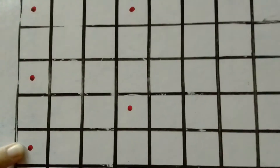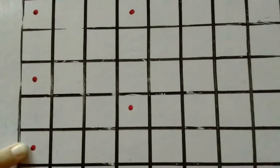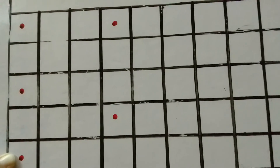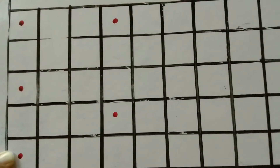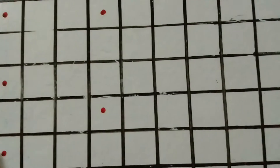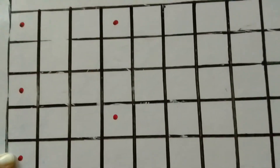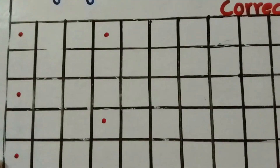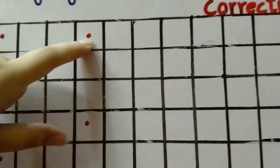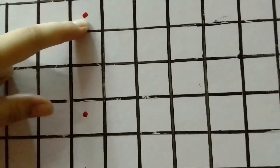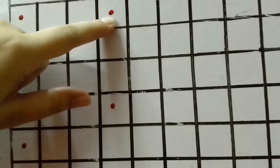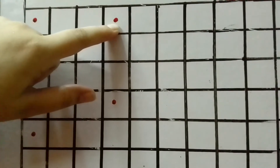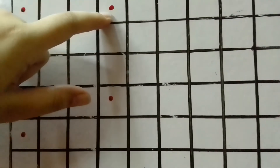Now please put your pointer finger on the third dot and write down number 5. Write down number 5. Good, children. Now this line is complete. Move to the next line. Here is also a dot — put your pointer finger there and write down number 3. Touch your number 3 to the bottom line of the box. Number 3. Write down number 3.